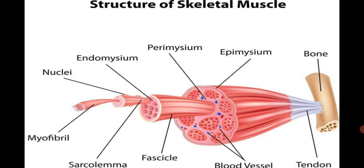The overall skeletal muscle is enwrapped in a fibrous connective tissue covering called the epimysium. This contains bundles of muscle cells called fascicles, and each fasciculus is covered by another layer called the perimysium, while the individual myocytes are covered by the endomysium. This is the overall structure of the skeletal muscle.